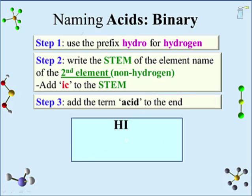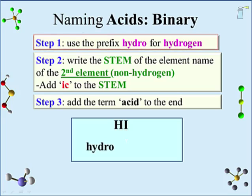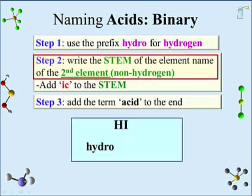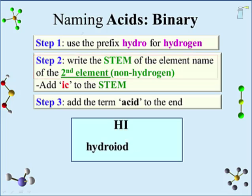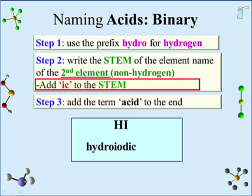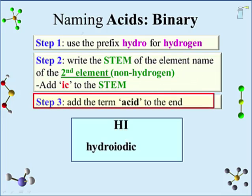A second example is HI. Step 1: name hydrogen as 'hydro.' Step 2: iodine loses the '-ine,' giving the stem 'iod,' to which we add '-ic.' Step 3: add the term 'acid.' HI is hydroiodic acid.